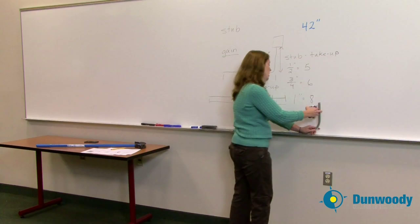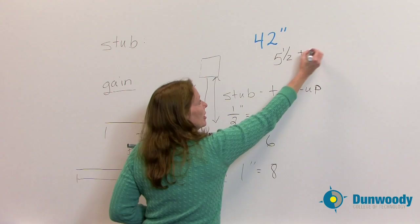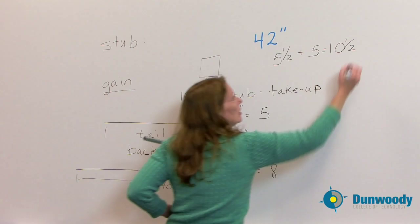So we'll write that down, what we had on our stub side. We had a stub take up of 5 and a half, plus our 5 inch mark, so that gives us a total of 10 and a half inches for our stub length.